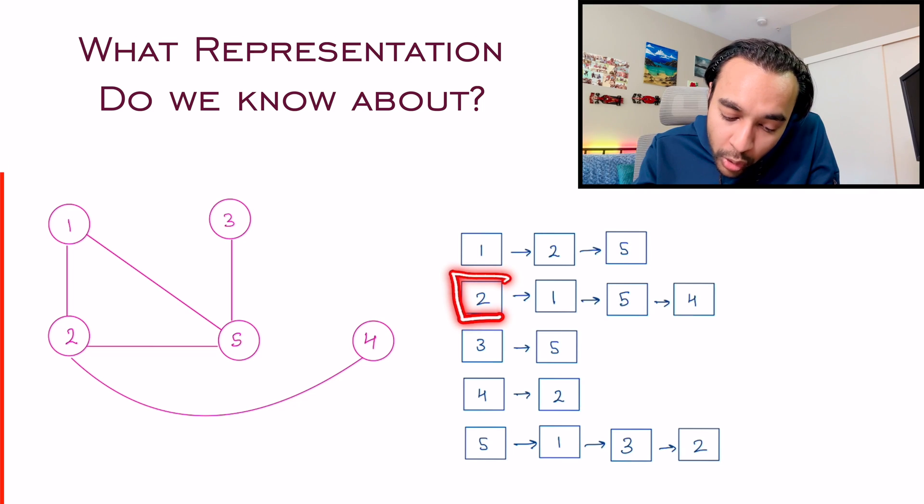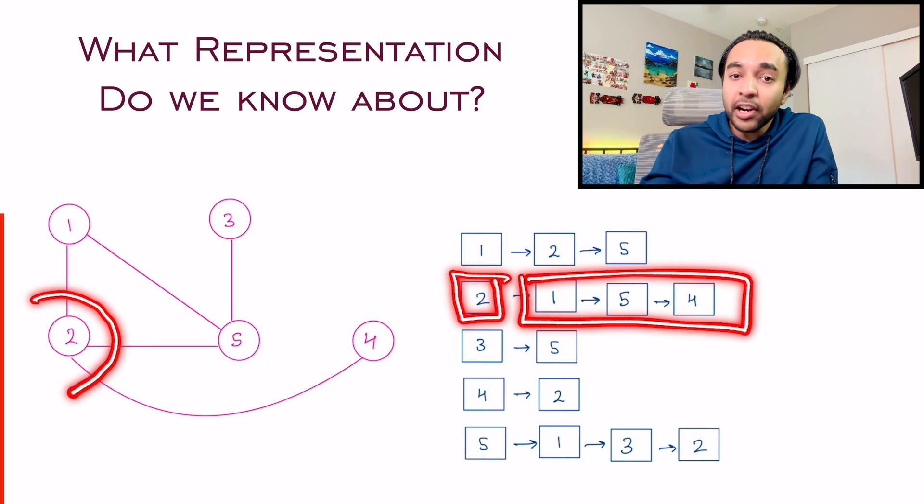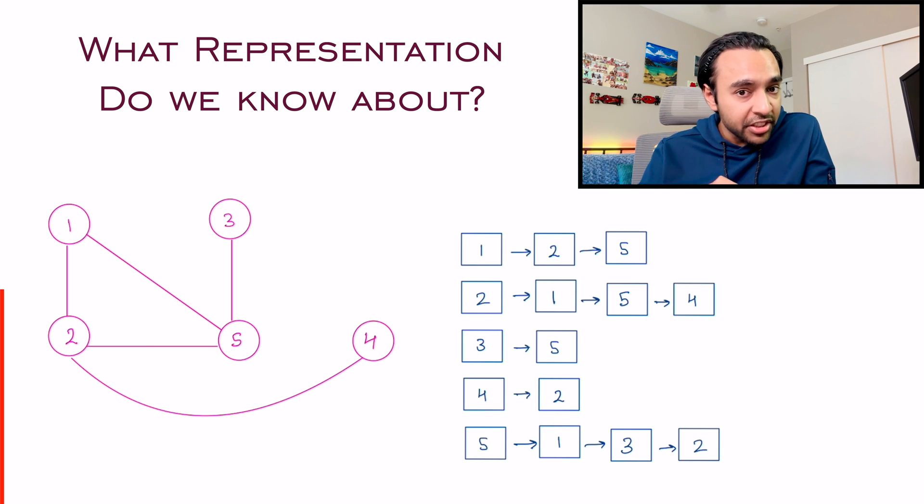This is now telling me that node two has three nodes which are directly connected. And we can see this also over here. This representation solves a lot of problems for us. You can traverse the graph. You can perform a BFS traversal and a DFS traversal.